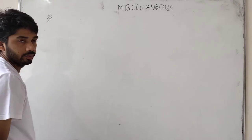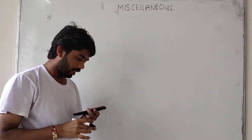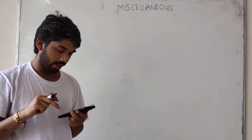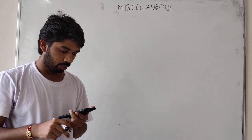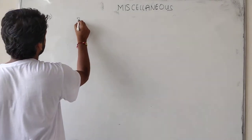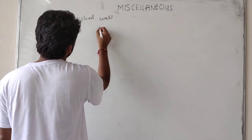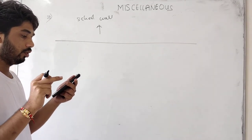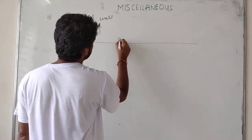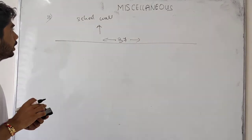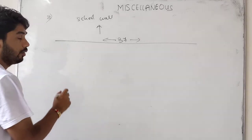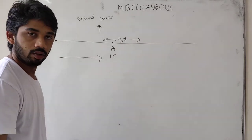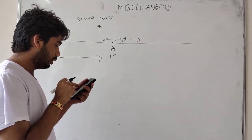Next is question number 8. 37 boys are standing in a row facing a school building. Ashwin is 15th from the left. If he is shifted 6 places to the right, his new position from the left becomes 21st. What is his position from the right? The formula is: Total equals left plus right minus 1.